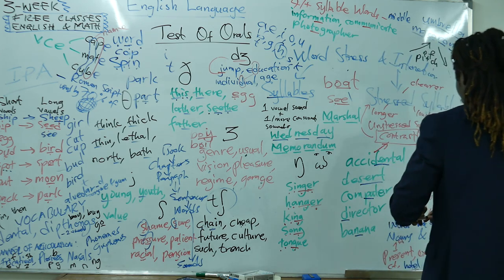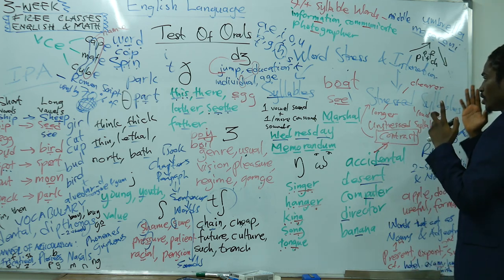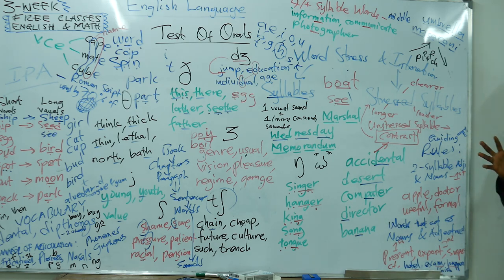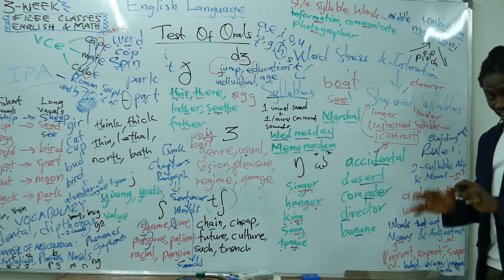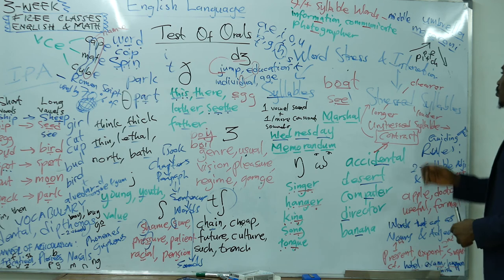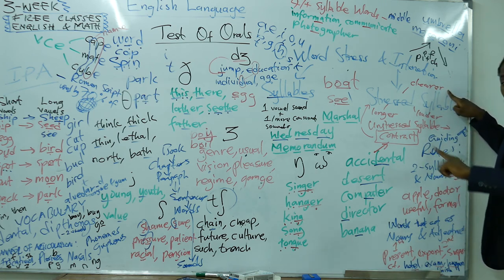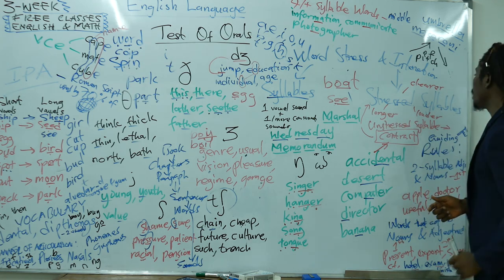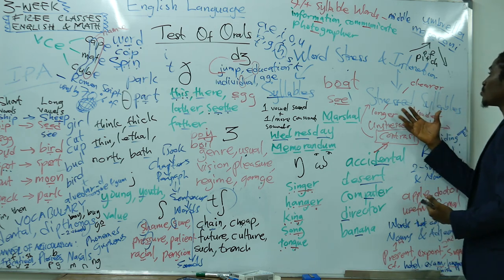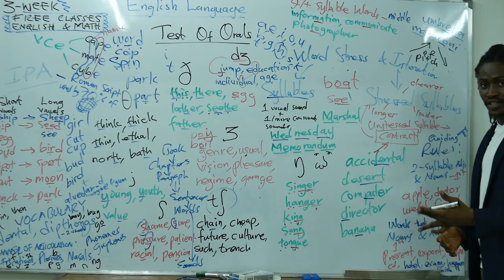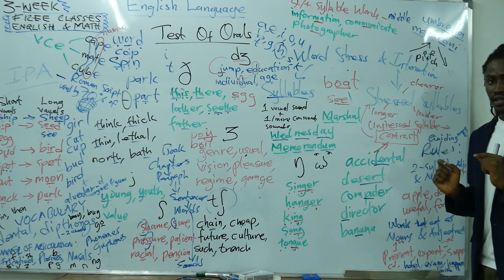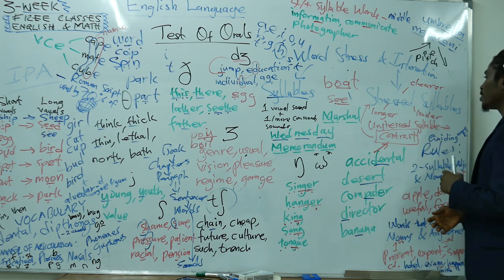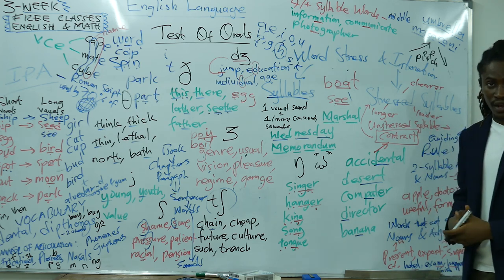Now let's turn our attention to stressed syllables. A stressed syllable is really what it says — it has to be stressed. What do we mean by stressing it? You have to say it much more clearly compared to the other syllables in the word. You have to spend longer pronouncing that syllable, and you have to say it louder. In contrast, unstressed syllables are spoken quicker — they are not as clear, and you don't spend a lot of time pronouncing them.